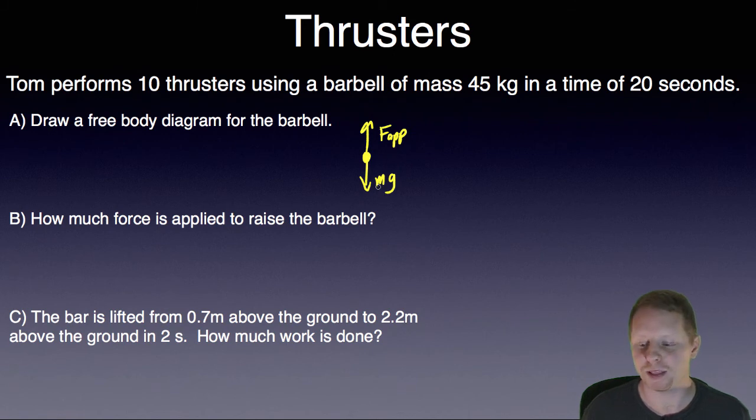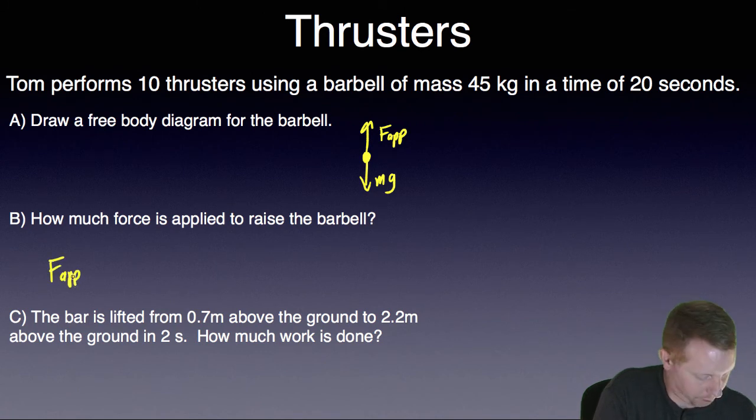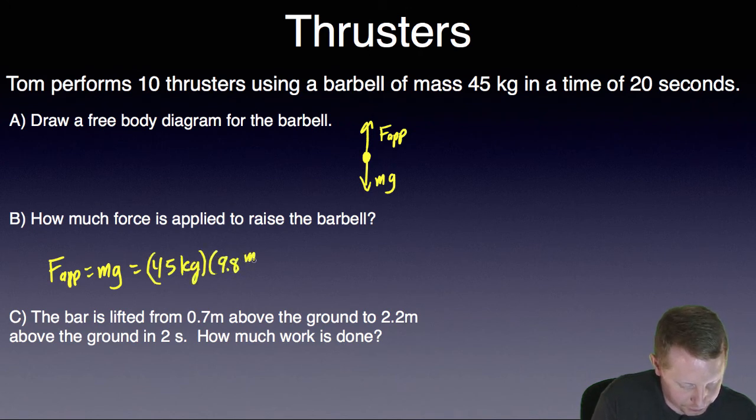So how much force is applied to the barbell to raise it? Well, the applied force must match mg and slightly exceed it in order for it to move upwards. So the applied force is at least equal to mg, which is going to be 45 kilograms times the acceleration due to gravity on the surface of Earth, 9.8 meters per second squared, or 441 newtons.